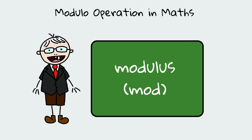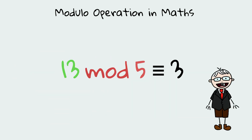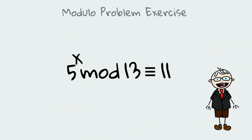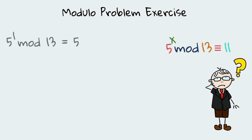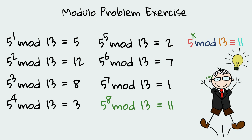Modulo operation is an operation where the result is the remainder of the division operation. We say 13 mod 5 is congruent to 3, because 13 equals 5 times 2 plus 3. What if we want to find x such that 5 to the power x mod 13 is congruent to 11? Let's try many values for x — after 8 tries, we find that for x equals 8, we get 5 to the power x mod 13 equals 11.